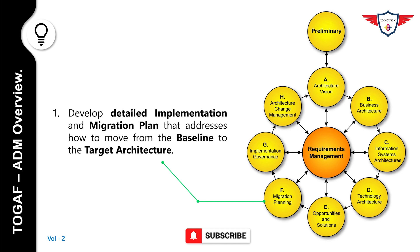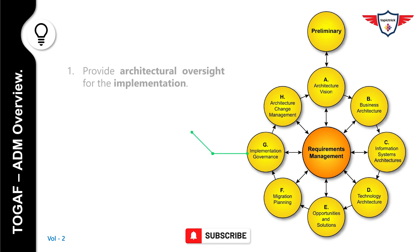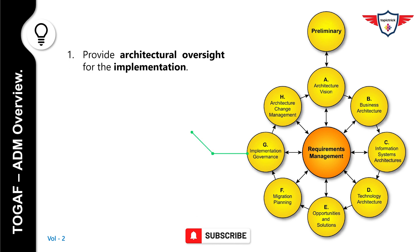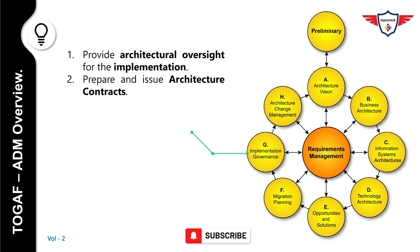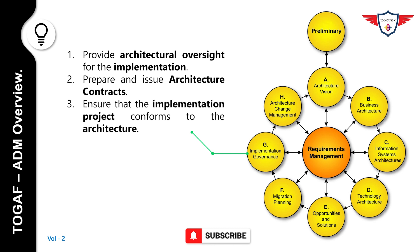Now let's look at Phase G — Implementation Governance. In this phase, you provide architectural oversight for the implementation. Prepare and issue architecture contracts, and ensure that the implementation project complies with the architecture.